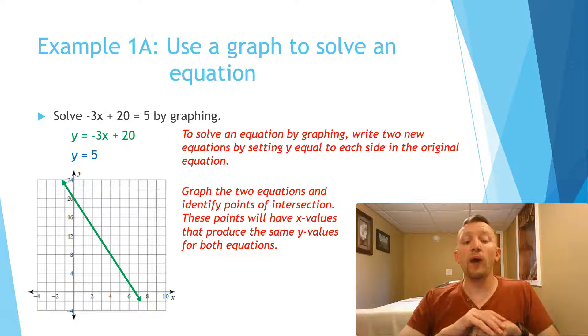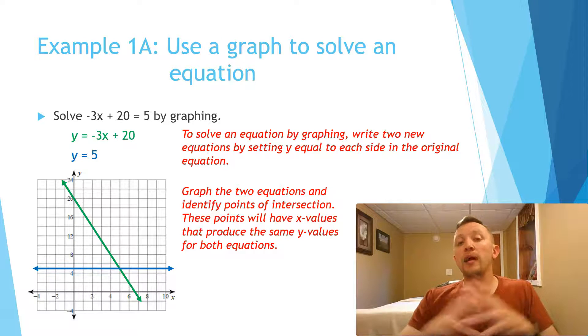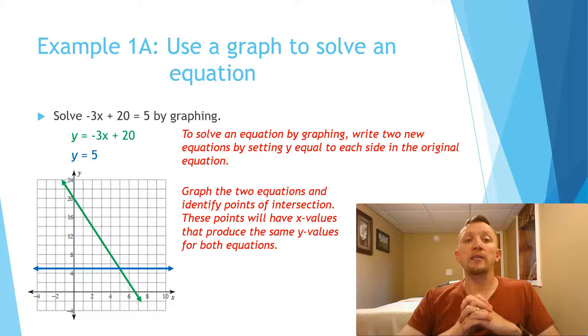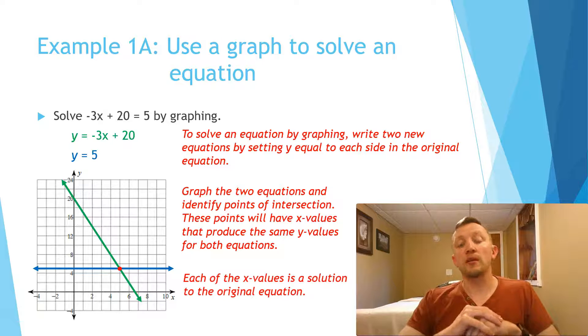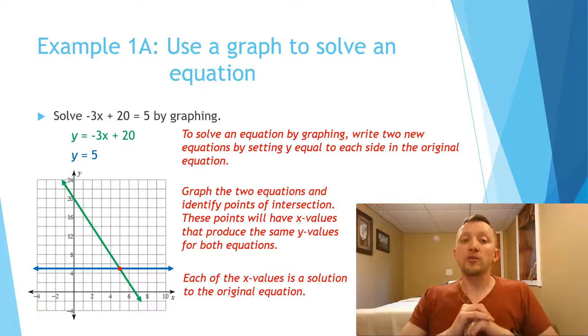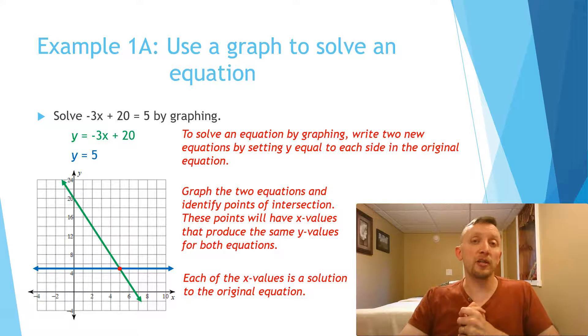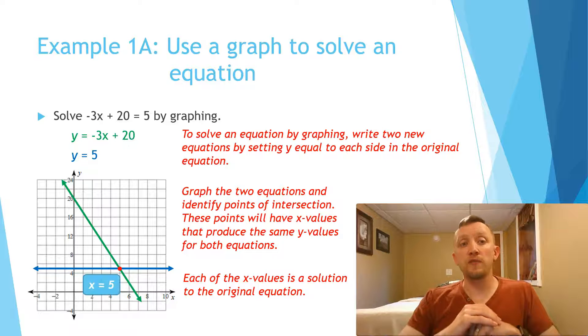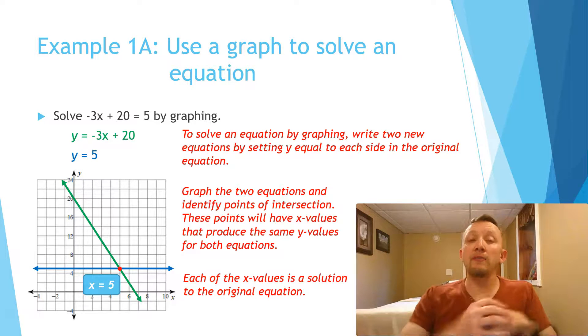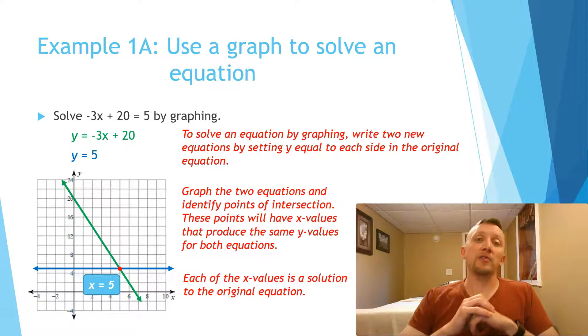The second graph is going to be y = 5. Now what that paragraph says is these values will have x values that produce the same y values for both equations. In other words, we're looking for the intersection. So we only have one intersection here, so our solution is x = 5. If I put 5 into the original equation, -3 times 5 is -15, and -15 + 20, sure enough, is 5.